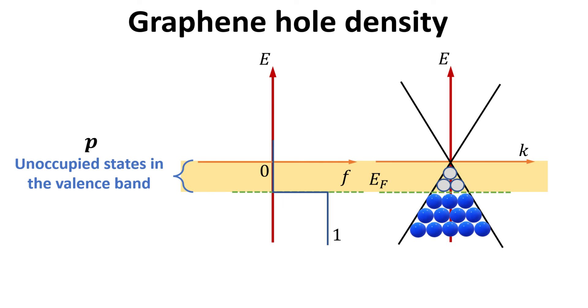When counting the hole density, P, we count the number of unoccupied states in the valence band only. Thus, at zero temperature, the Fermi energy has to be positive to induce electrons, and negative to induce holes.